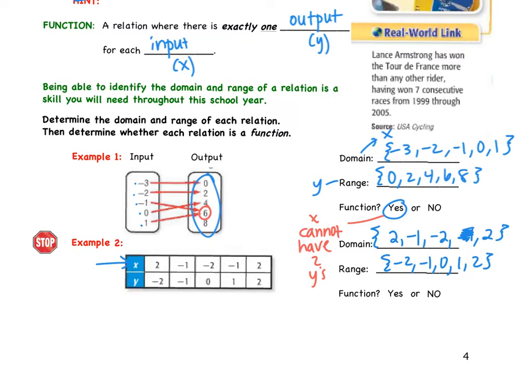And then, is this a function? So we need to look at our x's. Every x has one y. In this case, though, we're going to see we have same x, different y's, though. This is not a function. Not a function because we have the same x value has two different y values. So again, does x repeat? That's the biggest question. Does every x have only one y?